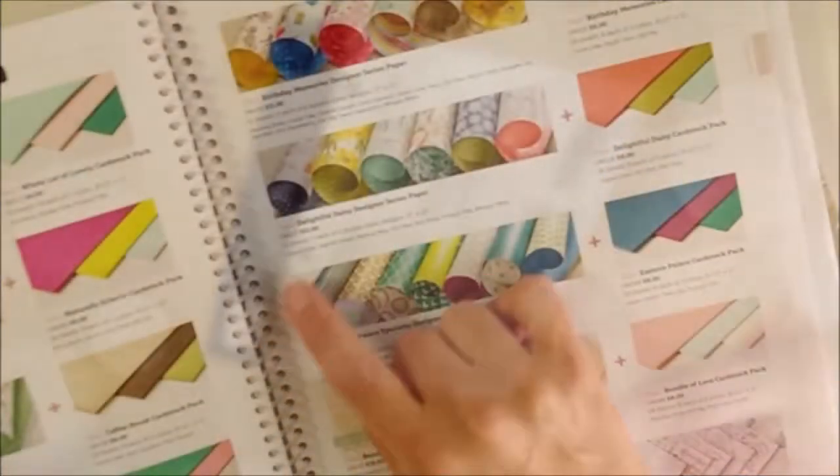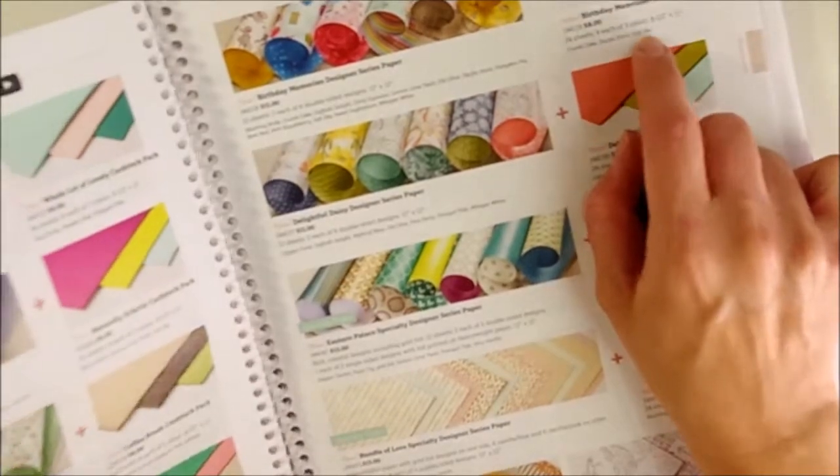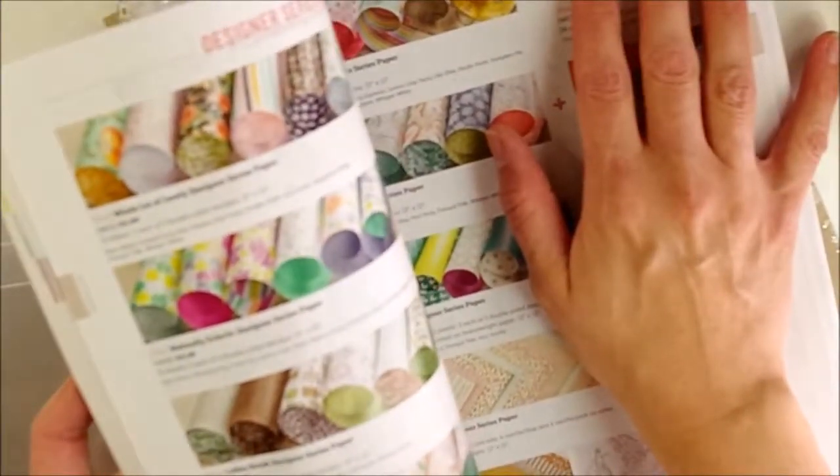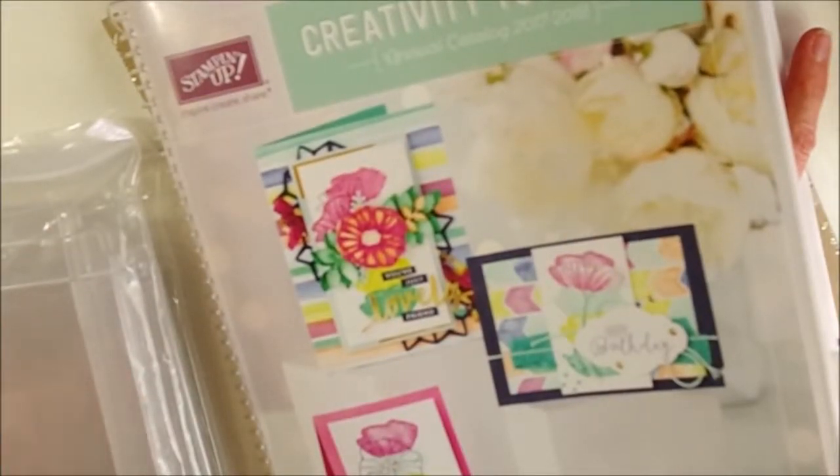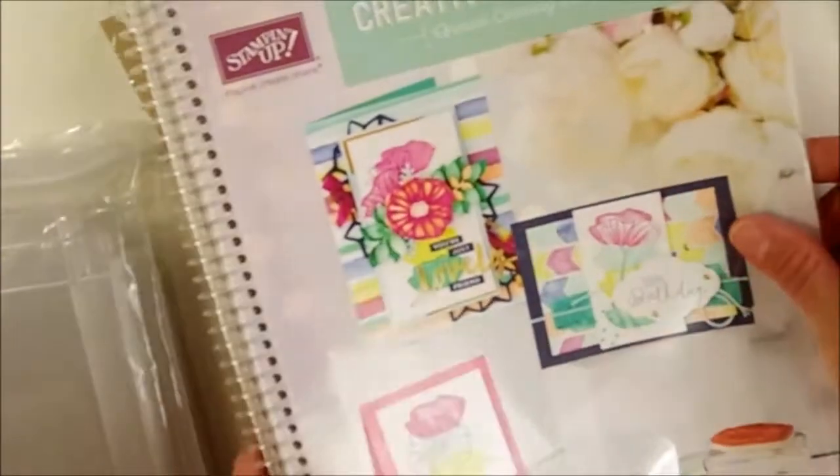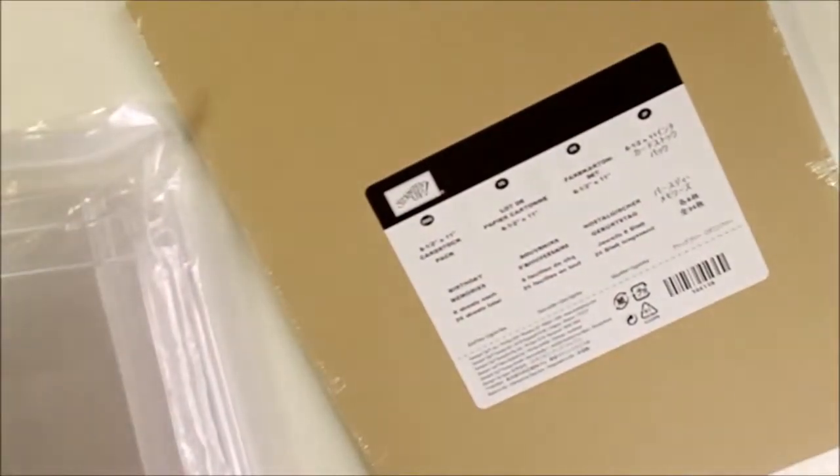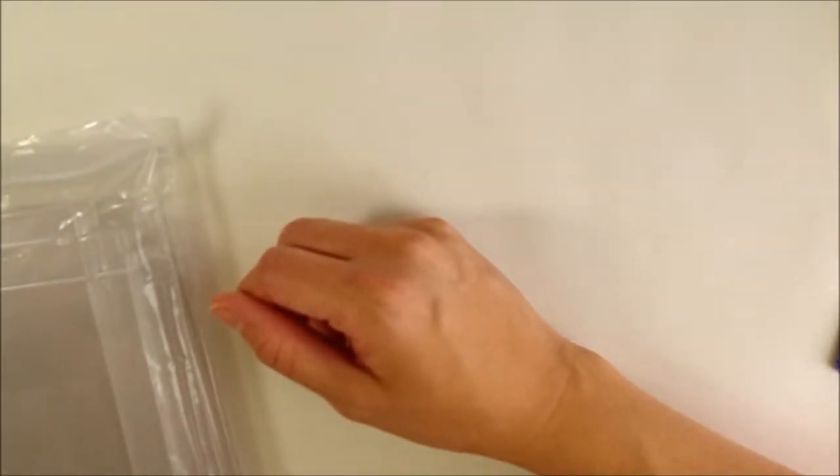I went ahead and got the Birthday Memories just because of the colors that are in it: Crumb Cake, Pacific Point, and Soft Sky. I thought those would be nice colors to go with some of the cityscape Christmas things and nice backgrounds for that. It took me a while to narrow it down, but that's the colors I went with. I also got some ink refills, simple stuff that you need.